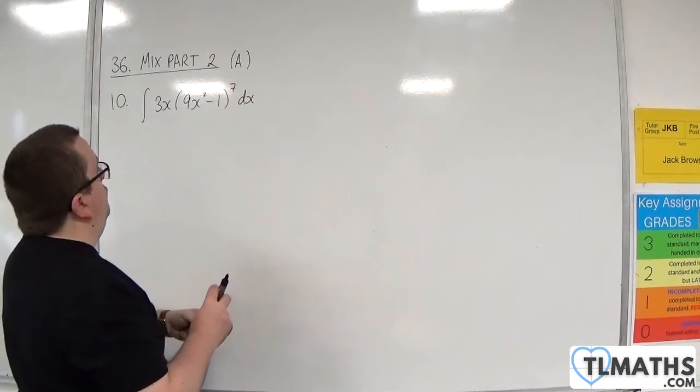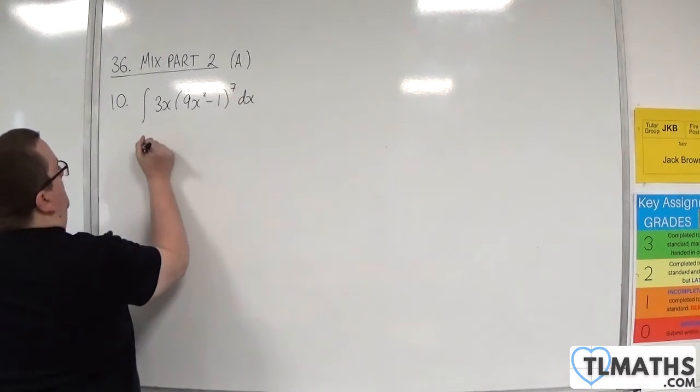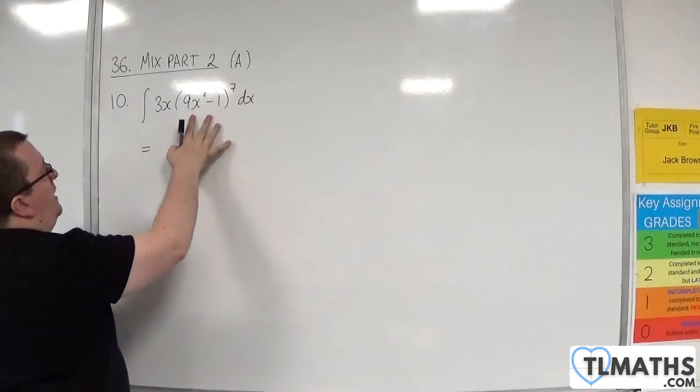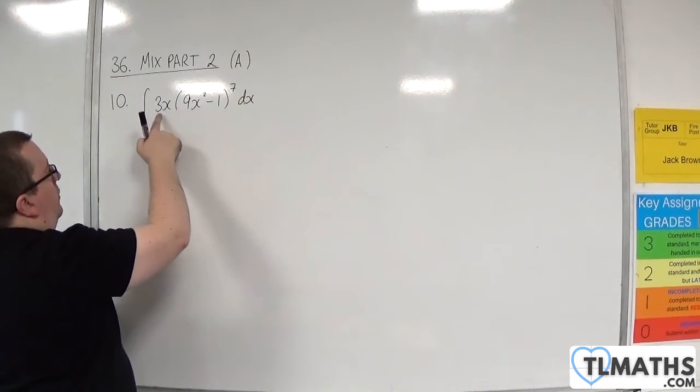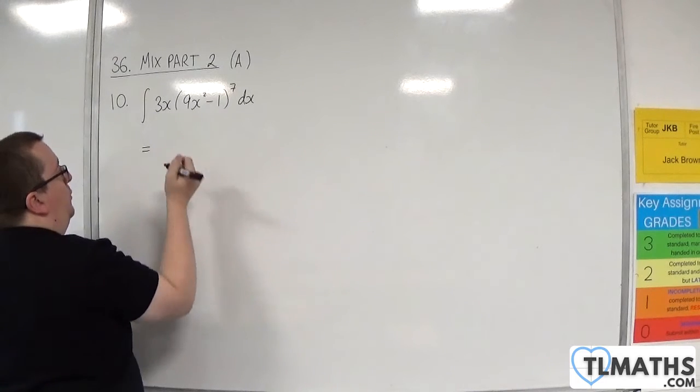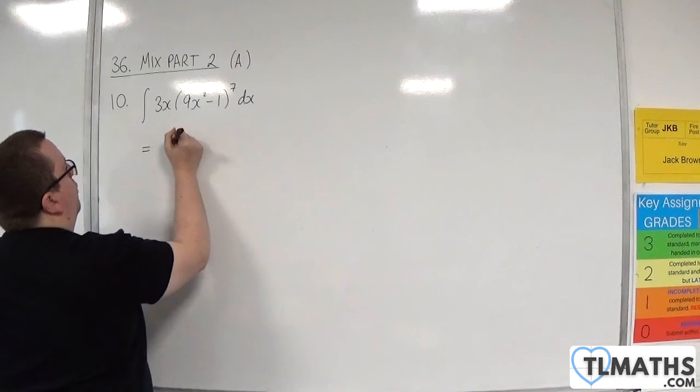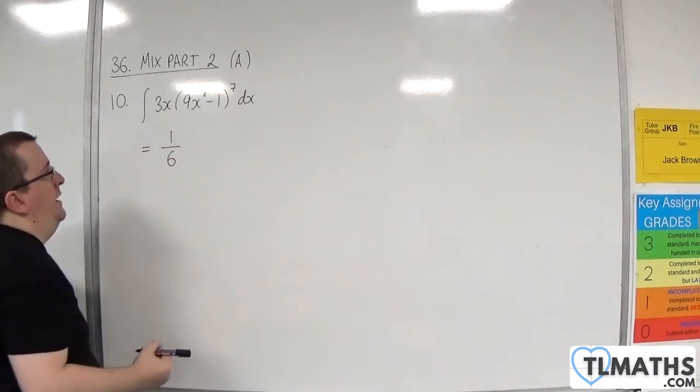So let's do this reversing the chain rule. So 9x squared, take away 1, differentiates to 18x. We've got 3x here, which is 1 sixth of what I need. So I need a 1 sixth there.